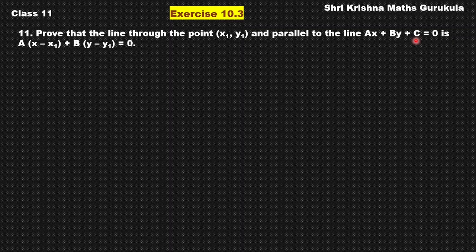Now when we know two lines are parallel, their slopes are definitely equal, right? So we shall use that concept now. Let the slope of the line Ax plus By plus C equal to 0 be m.